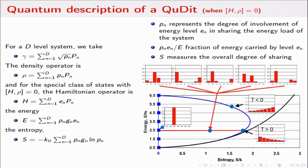For example, in the quantum case, if I have a D-level system, a system with D energy levels, in a particular subset of states where the density operator commutes with the Hamiltonian, you can think of probabilities as being the population of the various energy levels.